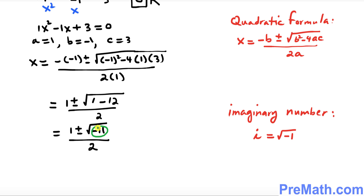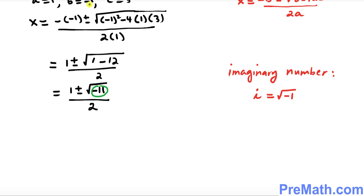Whenever you have a negative number under the square root, this becomes an imaginary number, where i equals the square root of negative 1. So we can write this as 1 plus or minus i — where i is the imaginary unit — times the square root of 11, divided by 2.